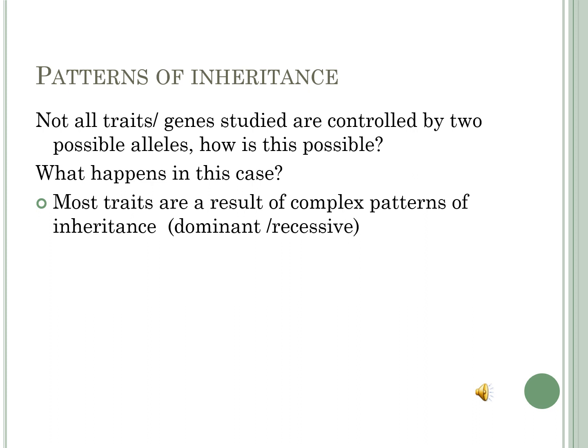Not all traits or genes studied are controlled by two possible alleles. How is this possible? What happens in this case? Most traits are the result of complex patterns of inheritance, not simple ones such as the dominant or recessive. When the dominant is available, it is stronger and it always shows. However, when the recessive is available, it is hidden or masked by the dominant allele.